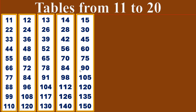15 sixes are 90. 15 sevens are 105. 15 eights are 120. 15 nines are 135. 15 tens are 150.